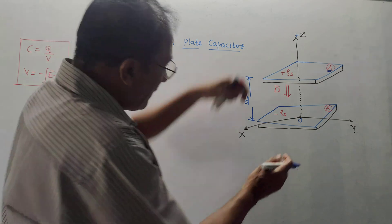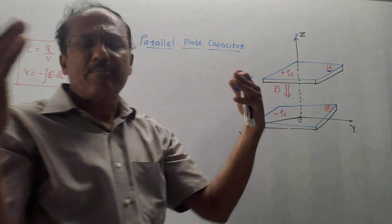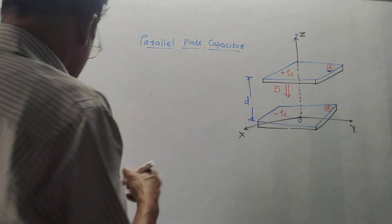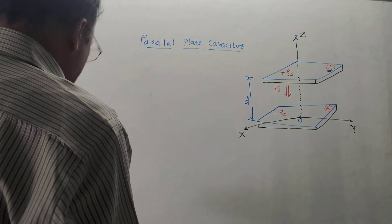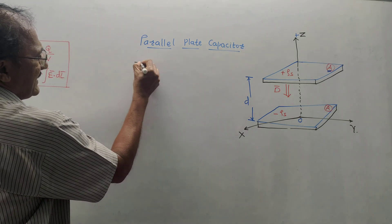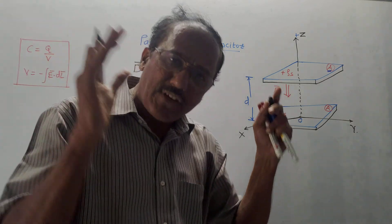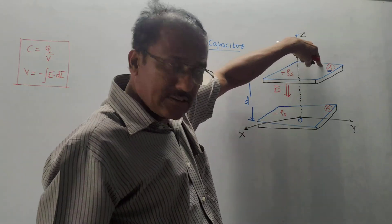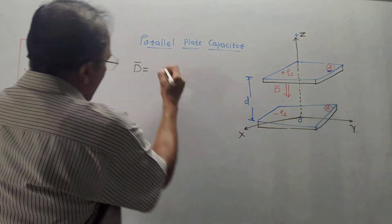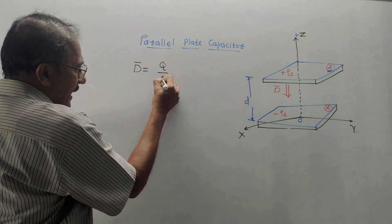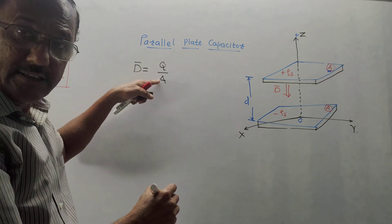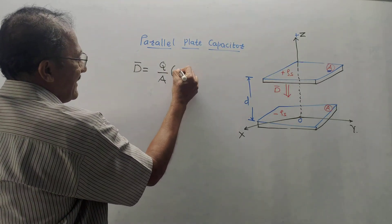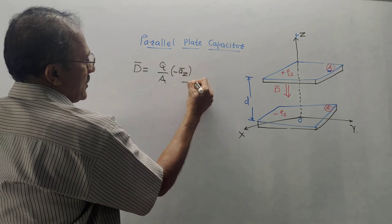D is the distance between the two plates. If the gap between the plates is filled with some dielectric, then the structure acts as a parallel plate capacitor. We can write the basic definition of D-bar. D-bar is electric flux density, and the basic formula is D-bar equals total charge upon surface area. In this case, surface area is denoted by A, so D-bar equals Q/A in the downward direction, that is minus az-bar. This is equation number one.